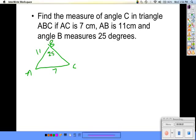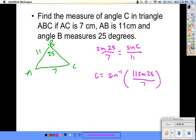Sine 25 over 7 equals sine of C over 11. So C is equal to the inverse sine of 11 sine 25 divided by 7. And here we get 41.61 degrees.